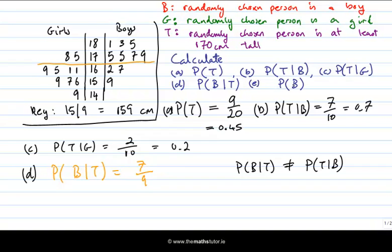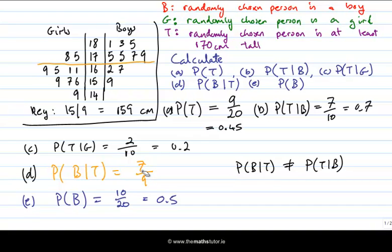Finally, P(B) — the number of boys over the total number of people — is ten over twenty, which is 0.5. So if we randomly choose a person, there's a 0.5 chance it's a boy. But from part D, if we know the person is more than 170 tall, the probability is seven over nine, approximately 0.77. Being told that the person is at least 170 tall changes the probability that they're a boy. That's one way to interpret conditional probability: you have extra information, and it updates the probability of your event.